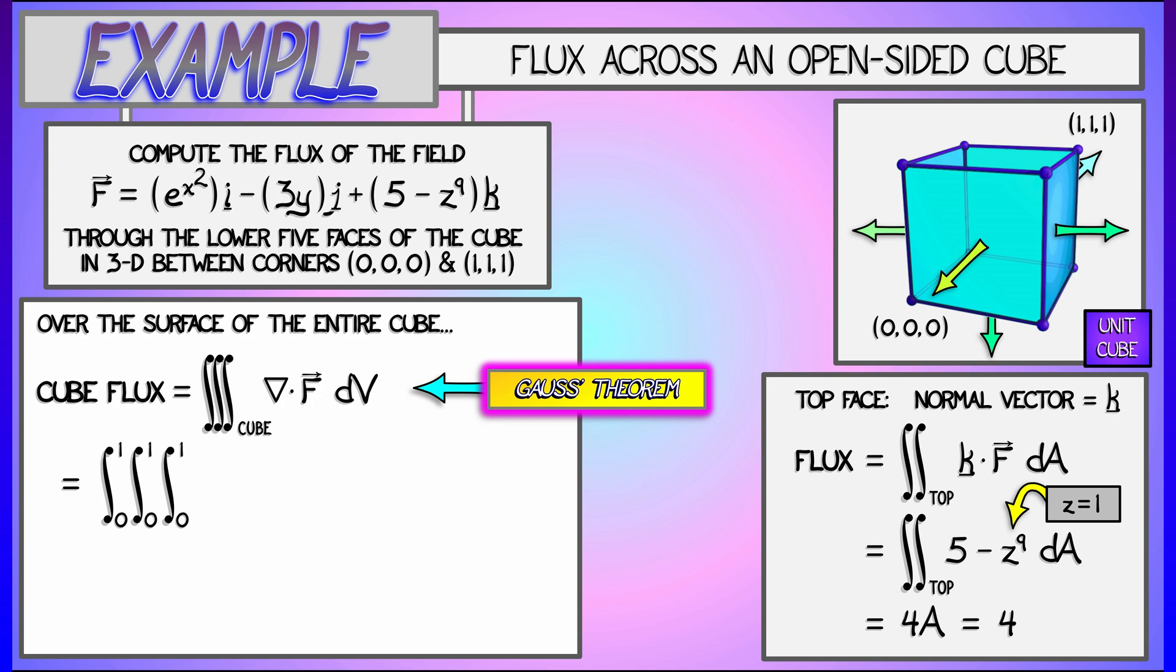Now, this looks a little scary, but it's not going to be so bad. You can show that the divergence is 2x e to the x squared minus 3 minus 9z to the eighth. Now, that looks bad to integrate, but it's not because the limits of integration are so nice.